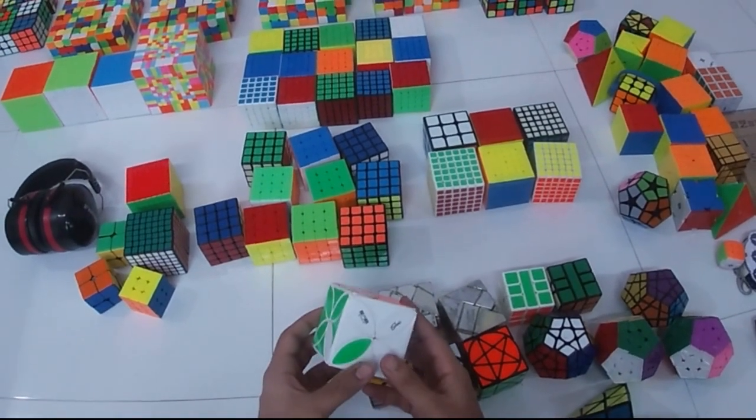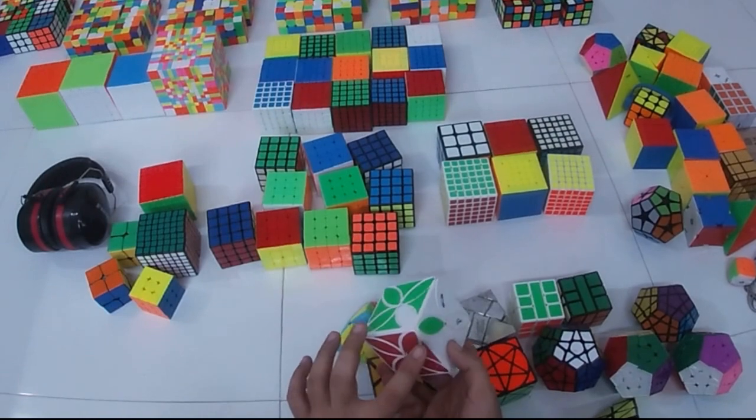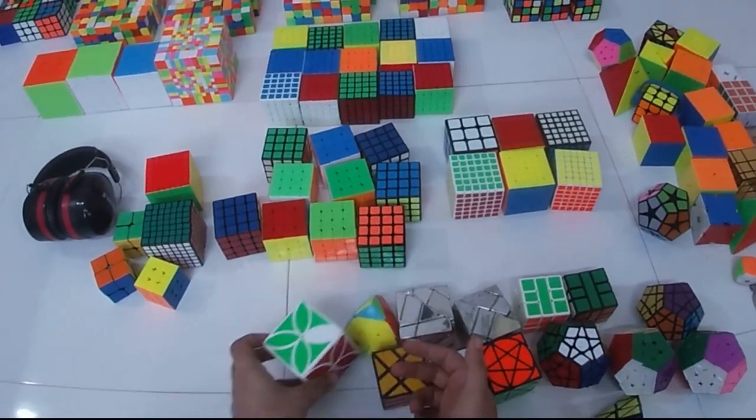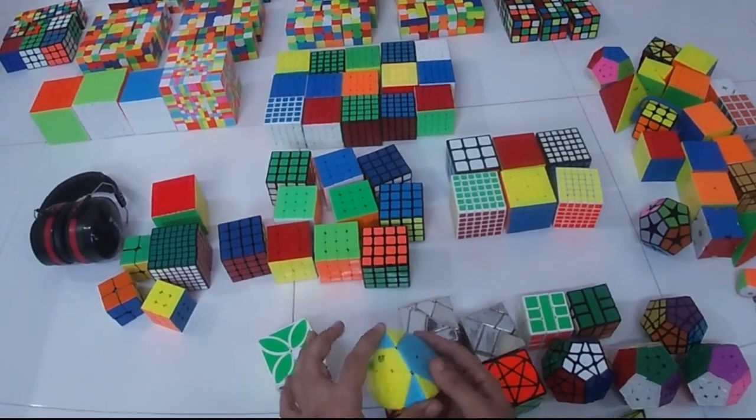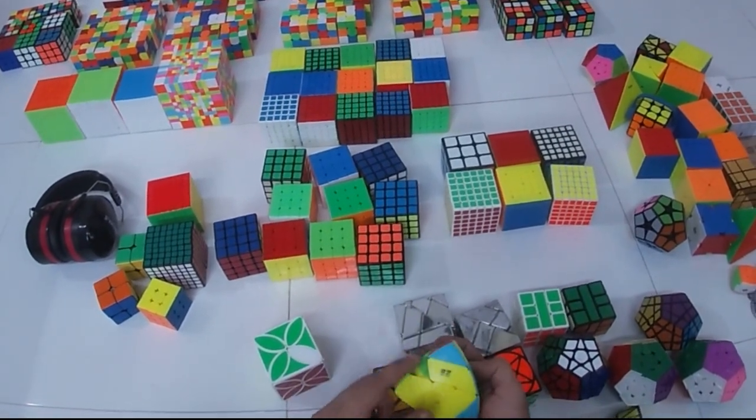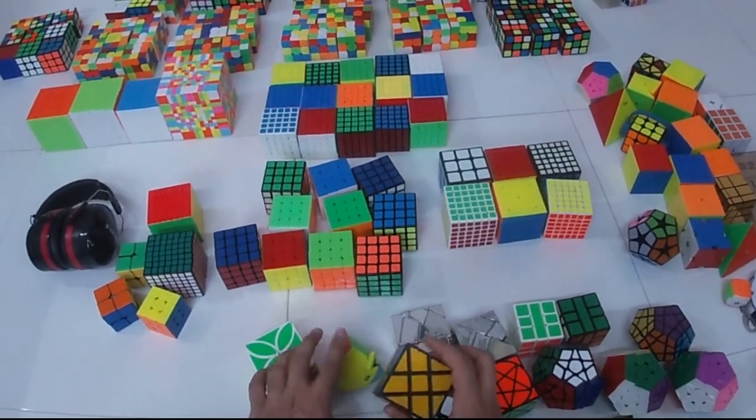Here we can see we have a clover cube that I kind of have solved up to the last two petals and left it. Here is a master morphix off by two corners and one twisted center.